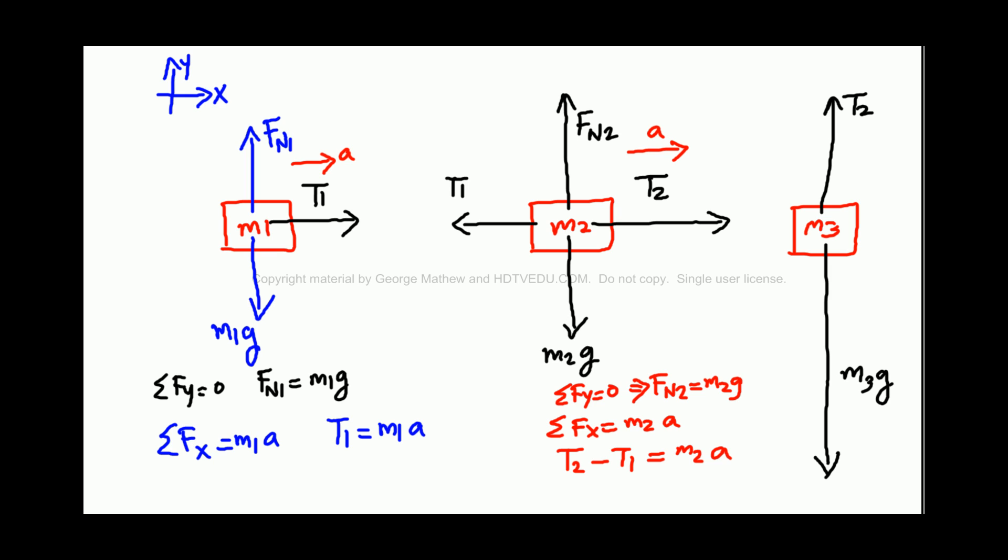And then, for the mass M3, we have M3g greater than T2. So you say, M3g minus T2 equals M3a. So we have all these equations.